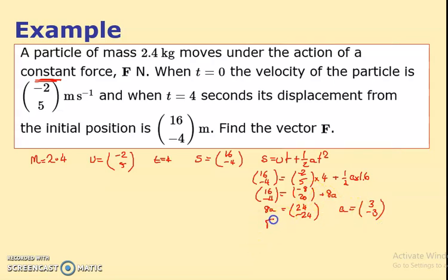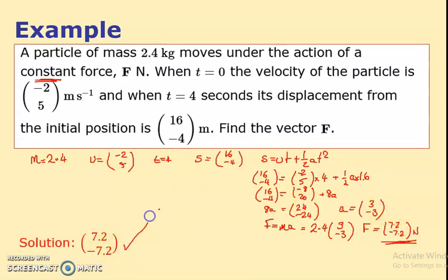And of course we know that F equals ma. So that equals, what was the mass again? It was 2.4. So I think the force therefore is 7.2i minus 7.2j newtons. And it says the vector, doesn't say find the magnitude of the force. So I think that's probably the answer.